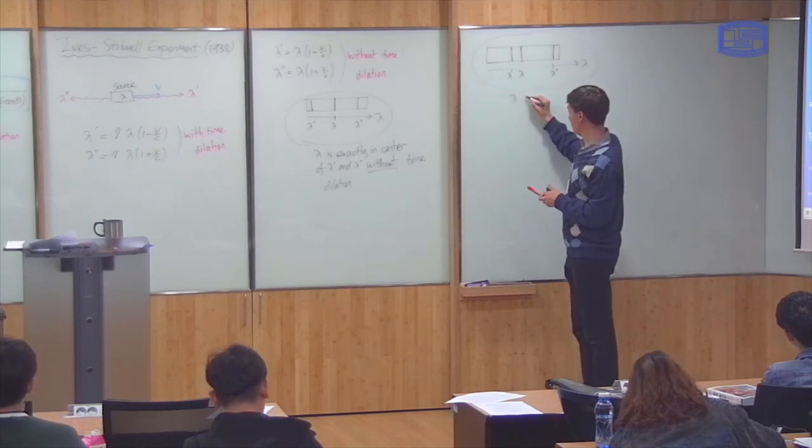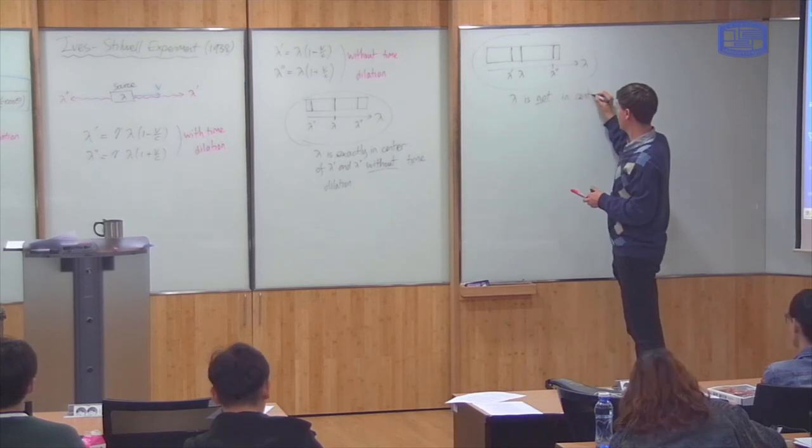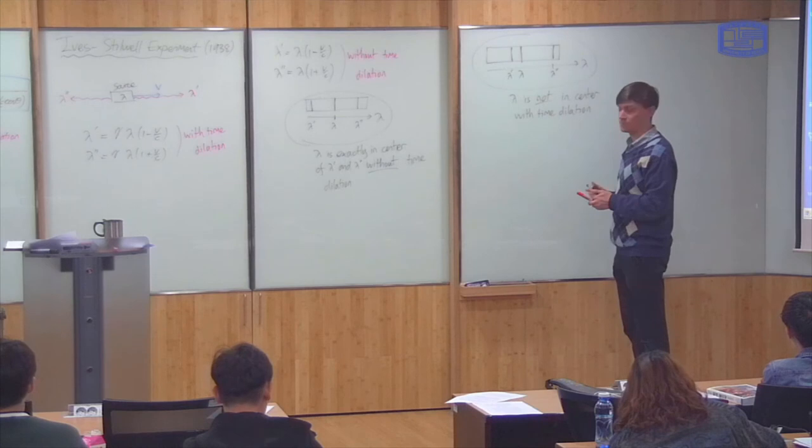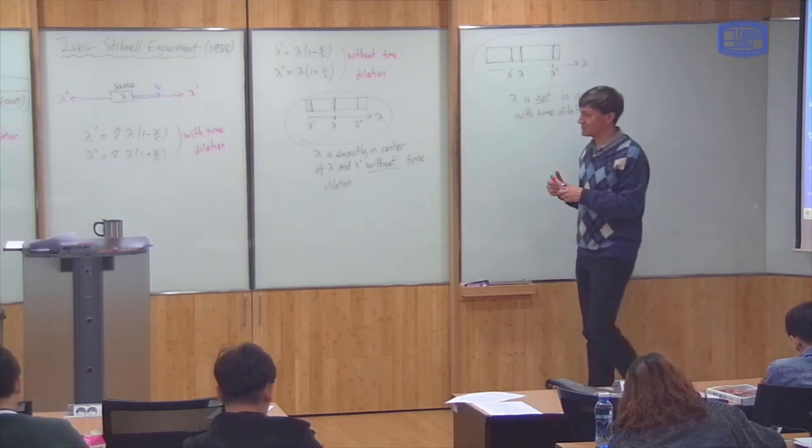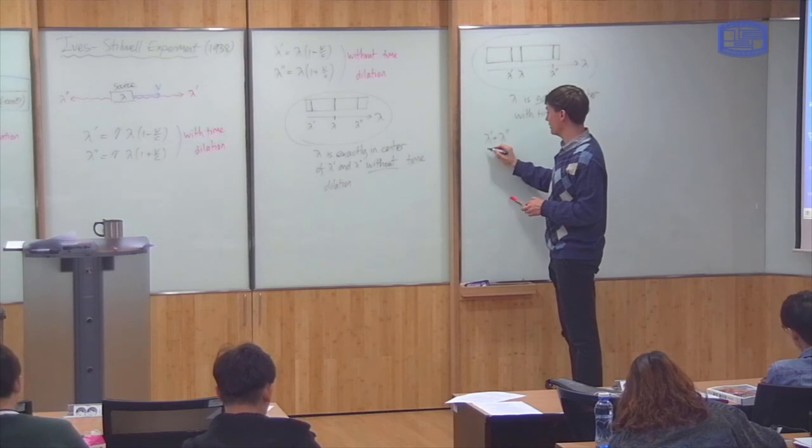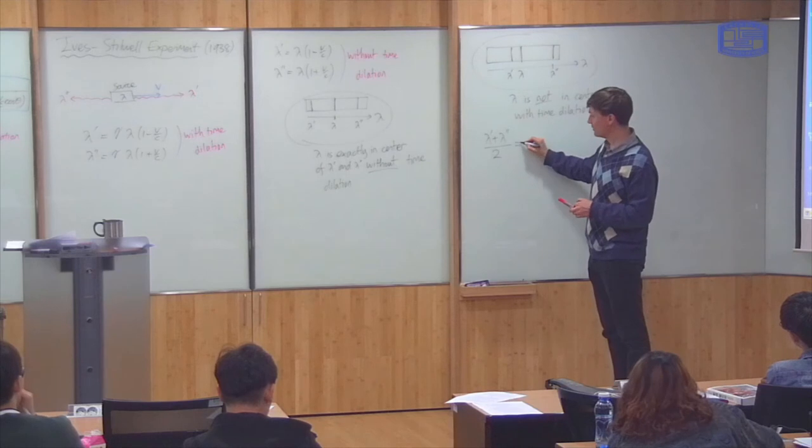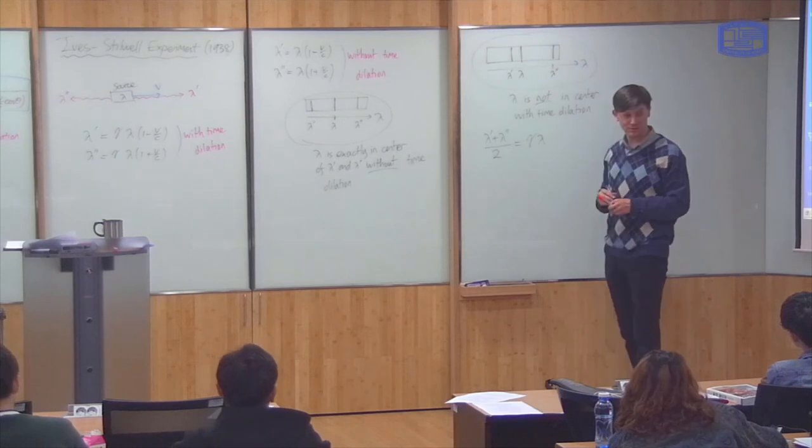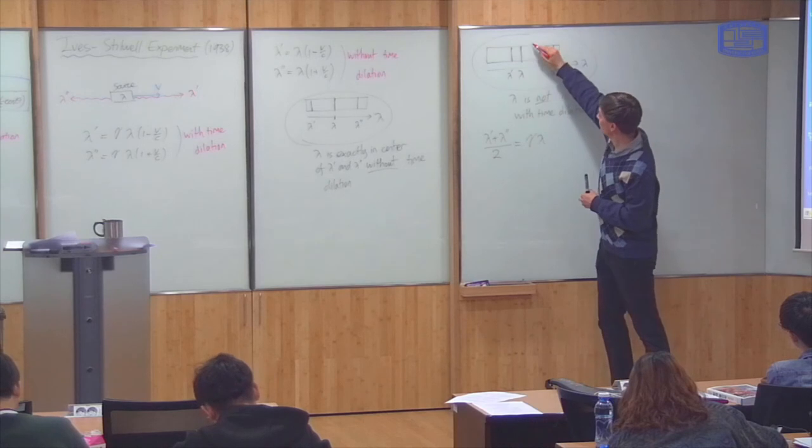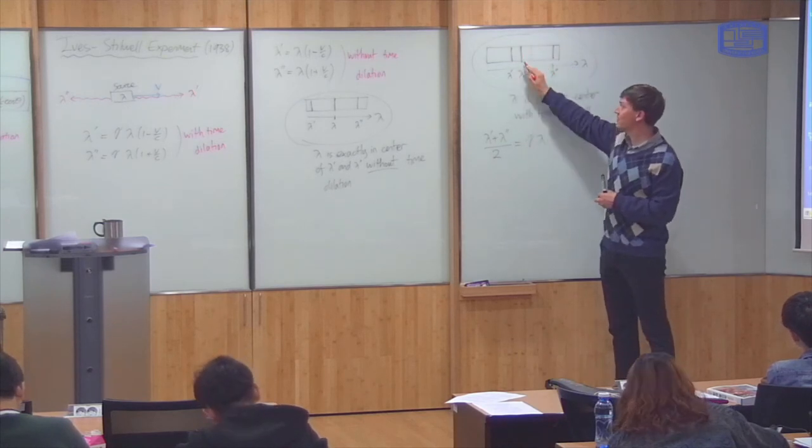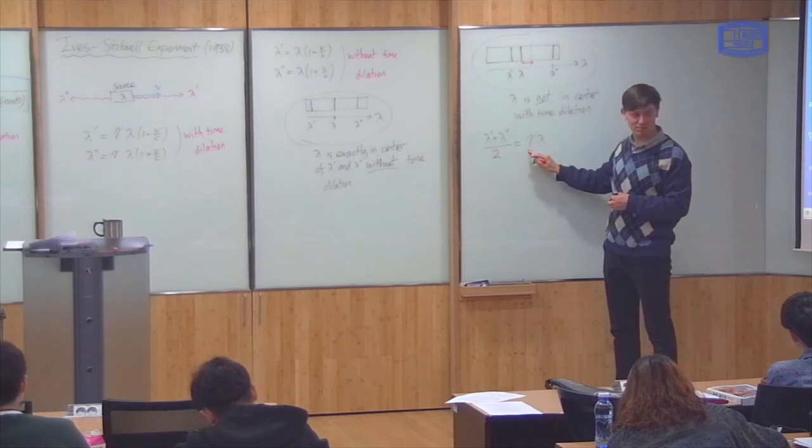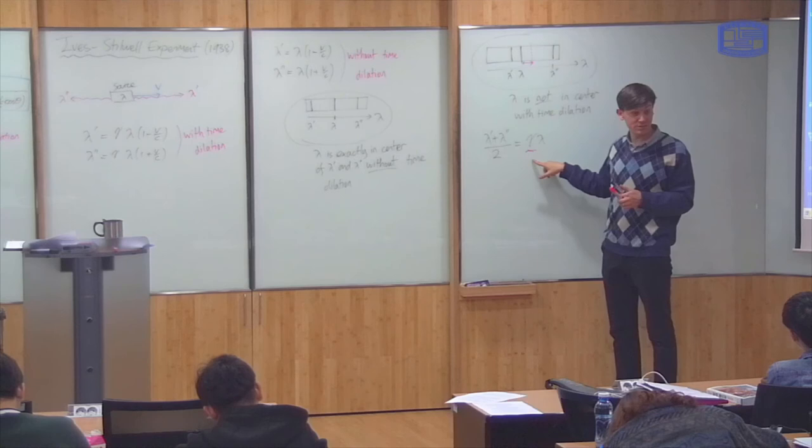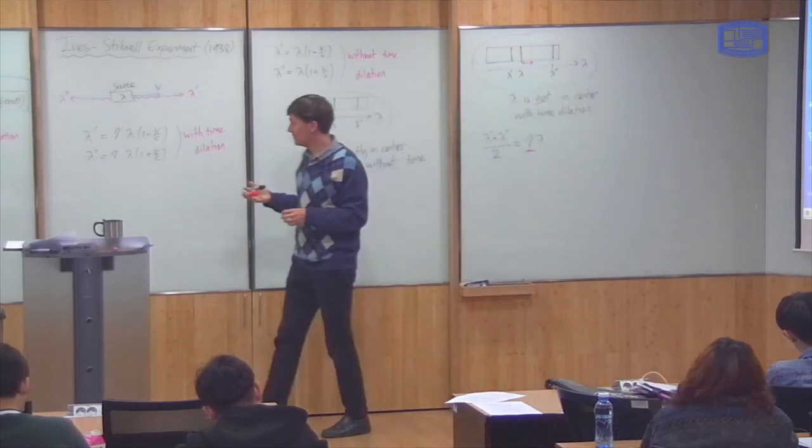So lambda is not in the center with time dilation. And actually, you can work this out mathematically. The center of lambda prime and lambda double prime, that's that. And from the formula there with time dilation, this turns out just to be gamma times lambda. So if you measure the center of these two, as opposed to the original wavelength lambda, the difference between these is exactly equal to the time dilation factor gamma. So it's a very neat experiment. So you measure the shift in the center, and that tells you the time dilation factor.